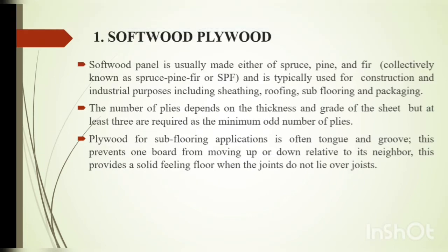First, softwood plywood. Softwood panel is usually made either of spruce, pine and fir, collectively known as SPF, and is typically used for construction and industrial purposes including sheathing, roofing, subfloor flooring and packaging. The number of plies depends on the thickness and grade of sheet, but at least three are required as the minimum odd number of plies. Plywood for subfloor flooring application is often tongue and groove, which prevents one board from moving up or down relative to its neighbor.